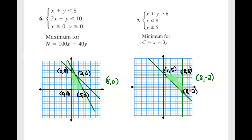Okay, and number seven, once again we're going to graph our three constraint equations. And then we're going to identify our vertices. And then we're going to plug each of those vertices into our objective function and find the minimum for that objective function.